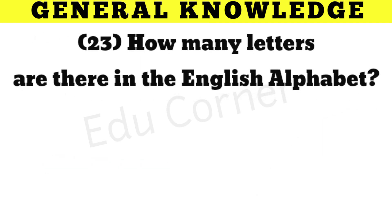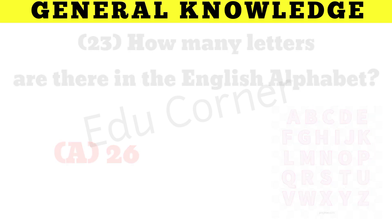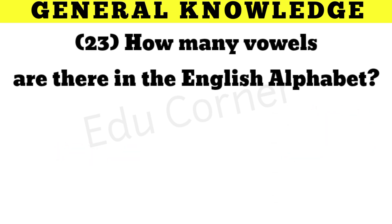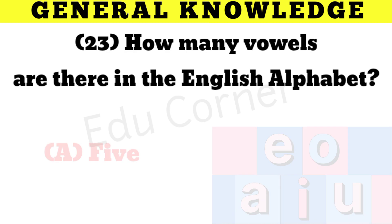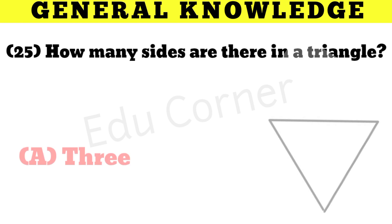How many letters are there in the English alphabet? 26. How many vowels are there in the English alphabet? The answer is 5. How many sides are there in a triangle? 3.